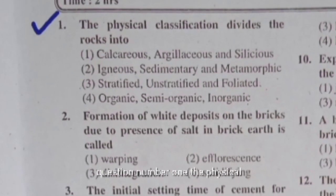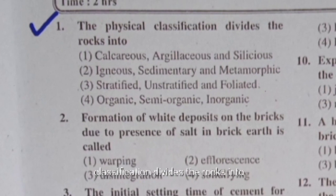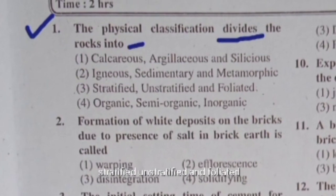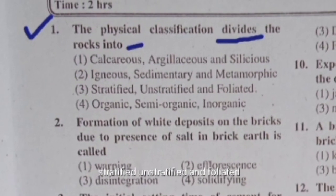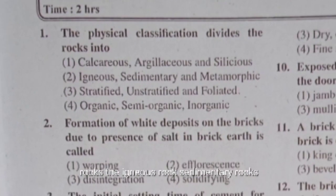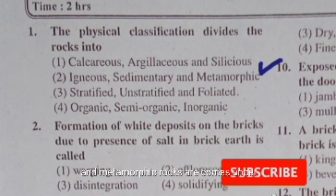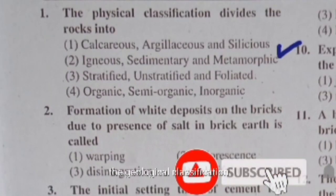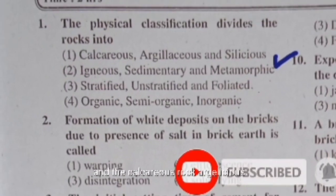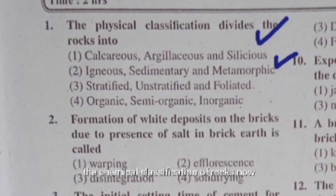The physical classification divides rocks into stratified, unstratified, and foliated rocks. Igneous rocks, sedimentary rocks, and metamorphic rocks come under the geological classification. Calcareous rocks, argillaceous rocks, and siliceous rocks come under the chemical classification of rocks.